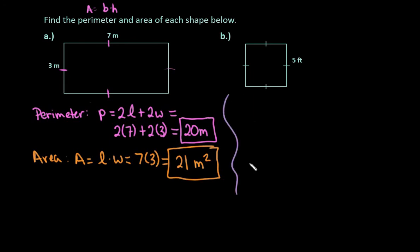Okay, moving into the second one, in order to find the perimeter, because this is a square, all of the sides are equal. I would just do four times my side length. So I would do four times five, which ends up giving me 20 feet. So the perimeter of this square is 20 feet.